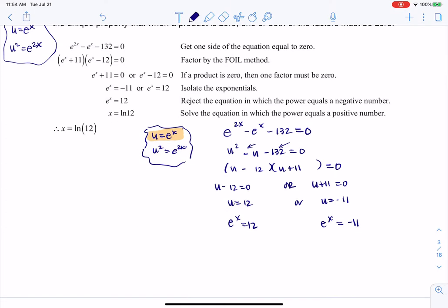And if I have that exponential equation, I'm going to log both sides so I can get that exponent down, so I get ln of e to the x equaling ln of 12, and ln of e to the x equaling ln of negative 11.